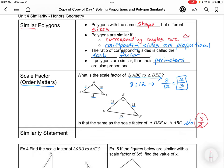A similarity statement would be written like this. If I wanted to pick this order, ABC to DEF, I would say triangle ABC is similar to triangle DEF. We want to make sure the corresponding angles go together. A corresponds to D, B corresponds to E, C corresponds to F. So that order matches.